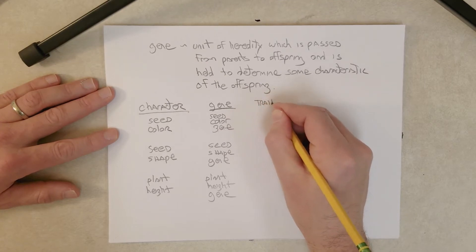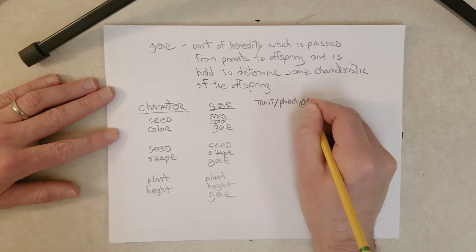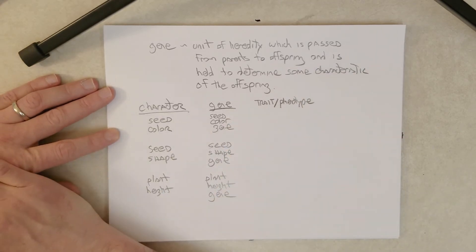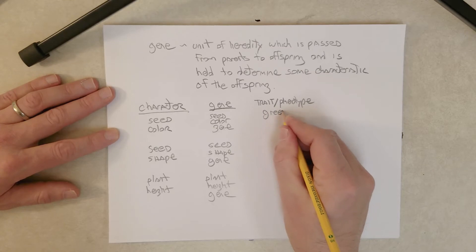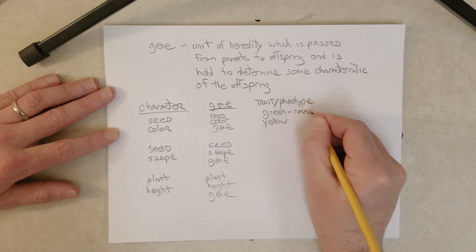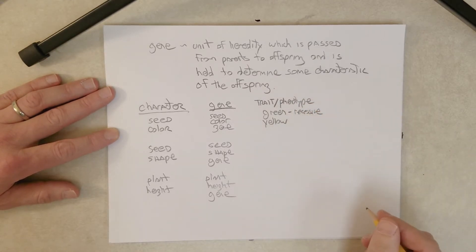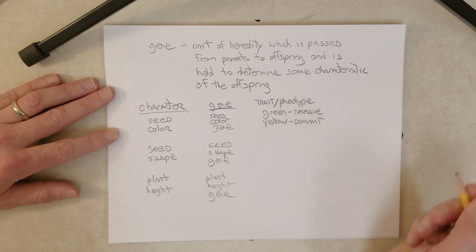Now, the trait, which is another word for phenotype, for seed color can be green or yellow. Now, the green is the recessive phenotype, and the yellow is the dominant phenotype.